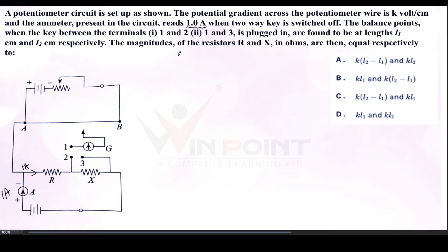In situation 1, terminals 1 and 2 are connected. With this connection, resistor R is in the circuit. Current flows through R, through the key, to the galvanometer, reaching the jockey, and we can find the balancing length, which is L1. The resistance is R and current is 1 Ampere. The equation for voltage drop is I into R, so I·R = k·L1.